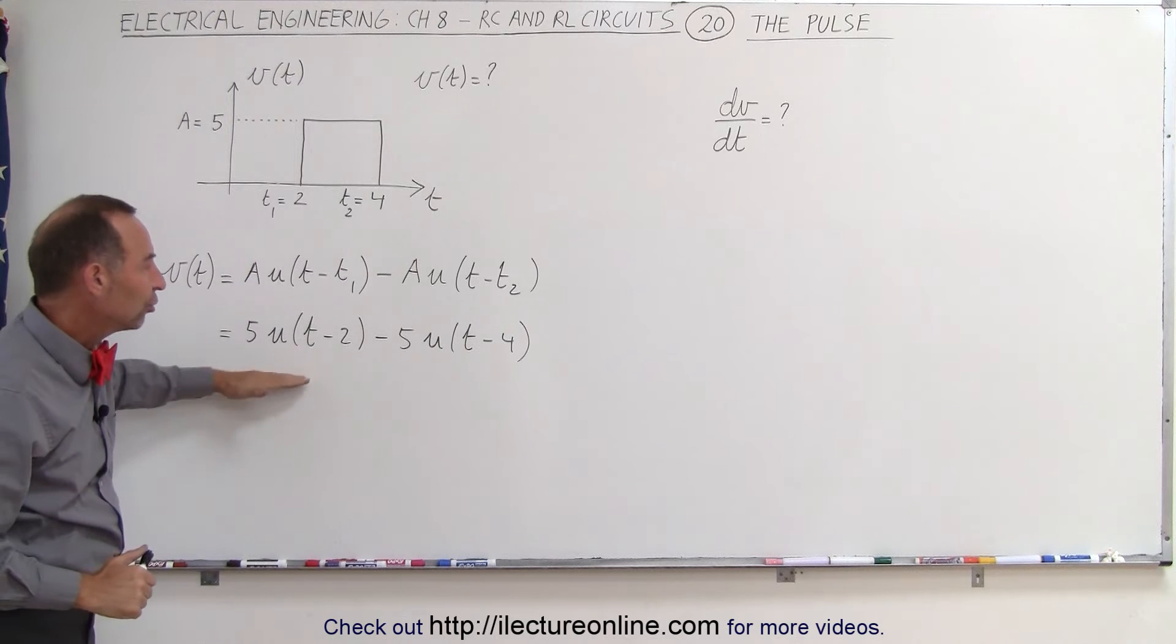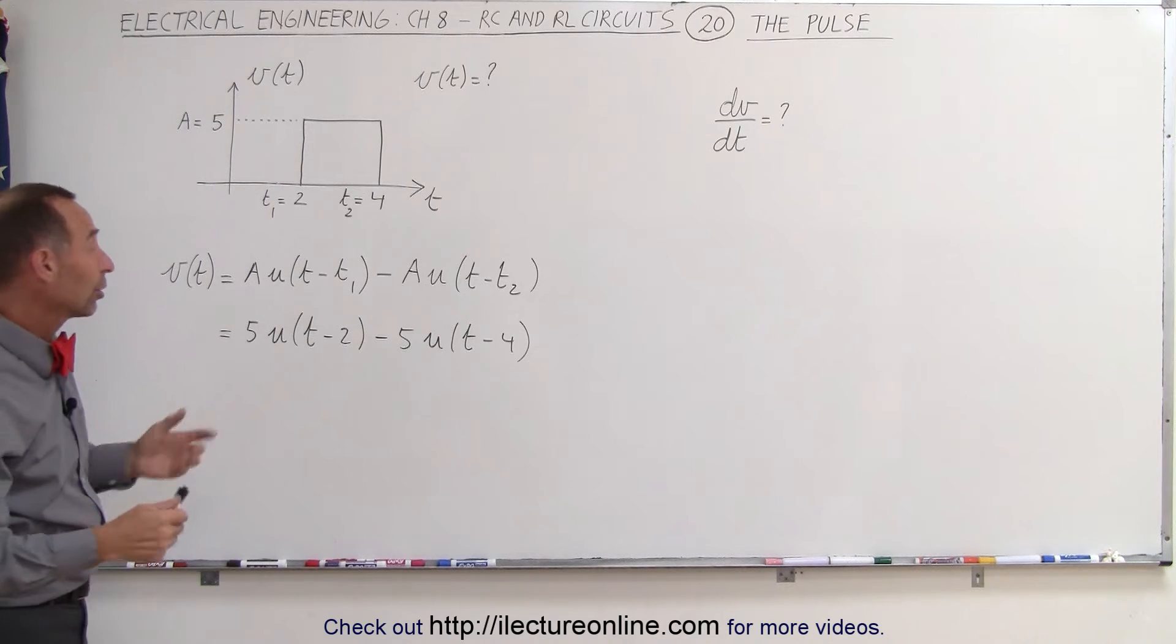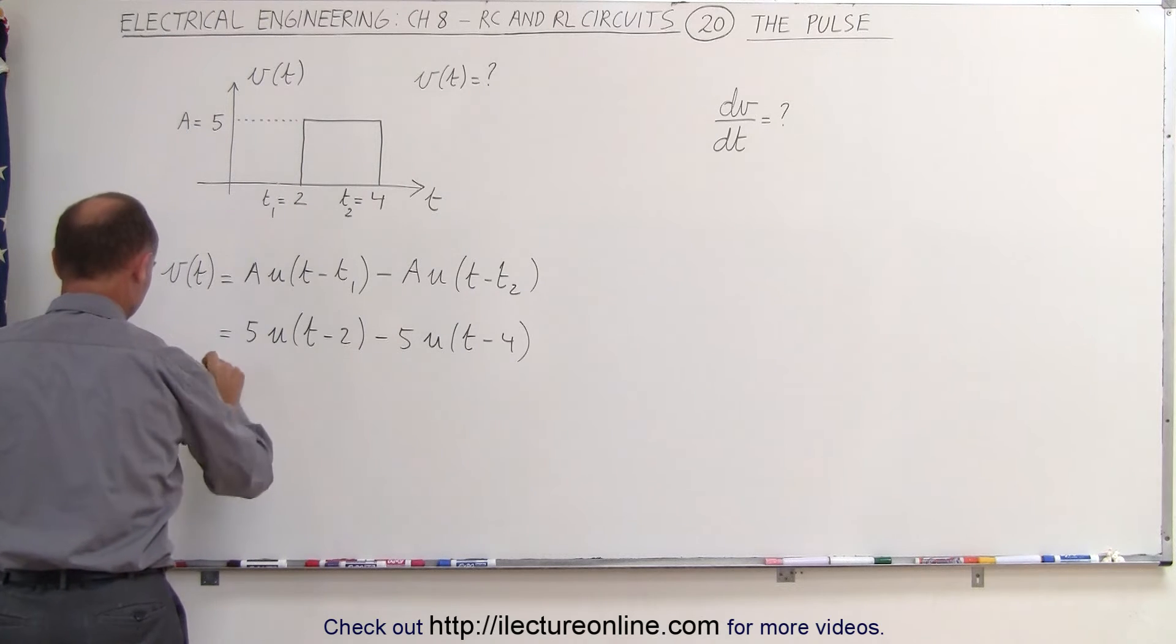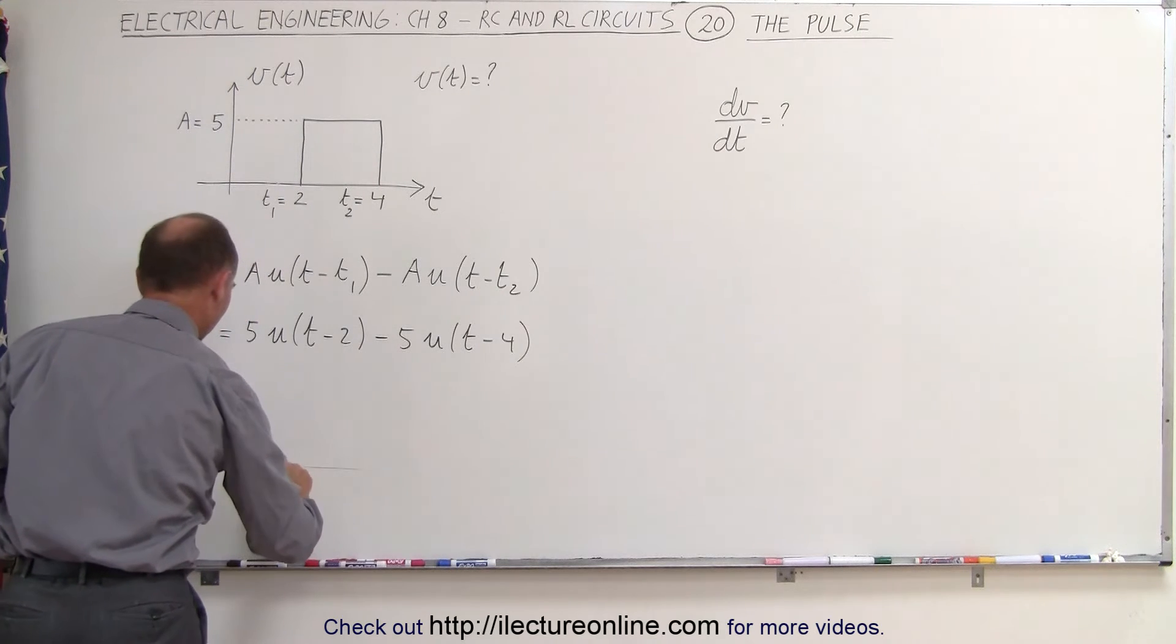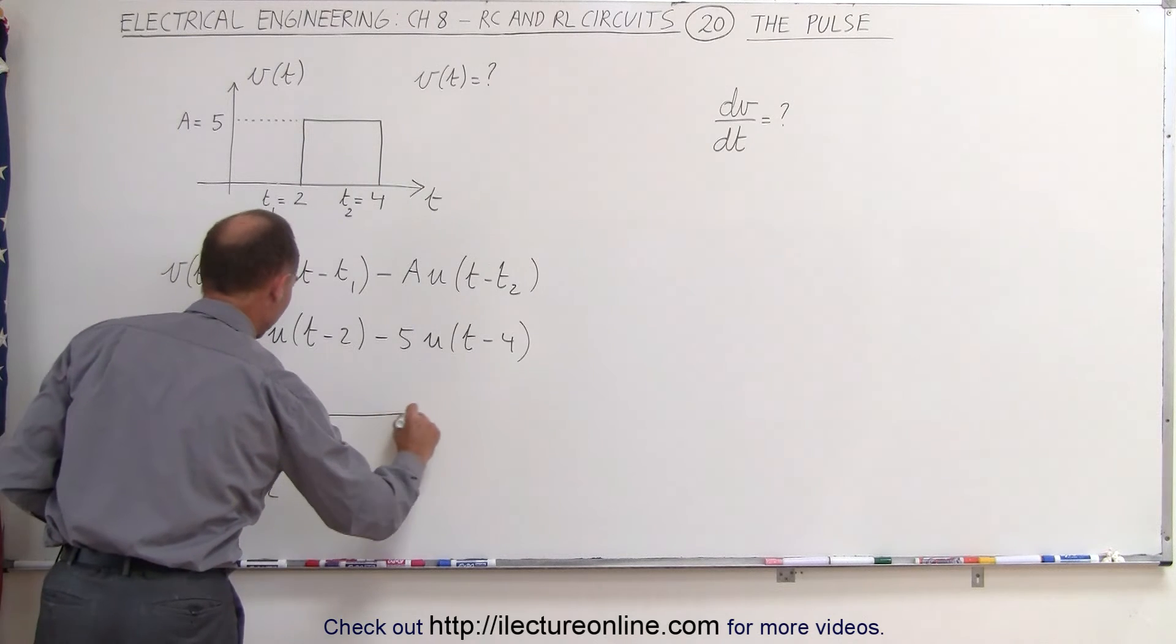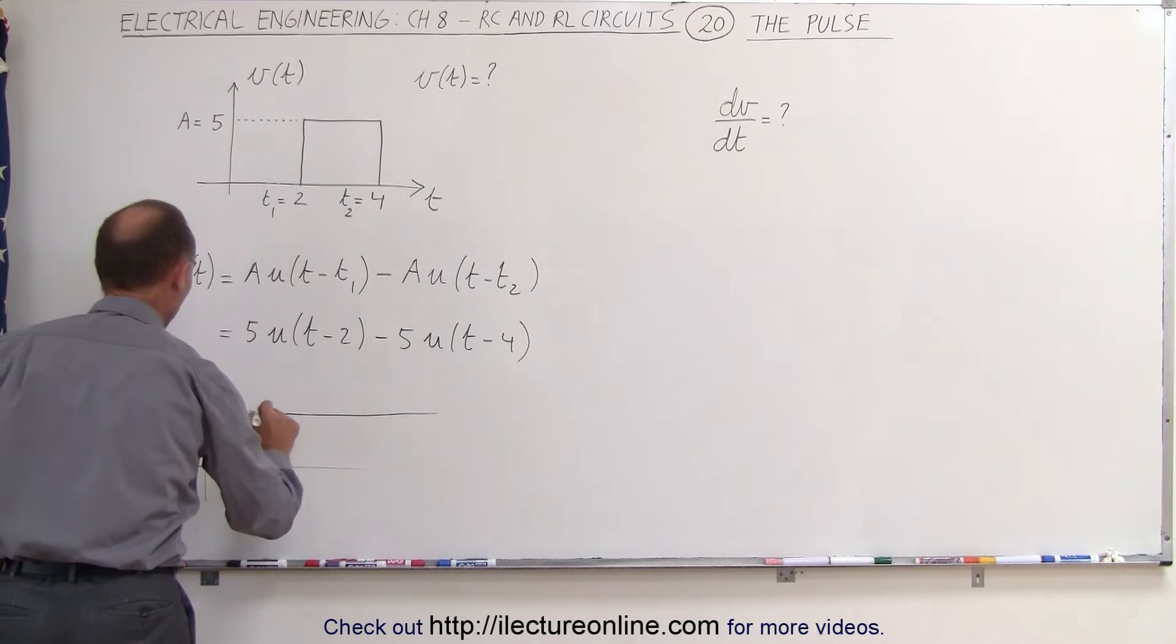If we separate these two as two separate functions, they will look as follows. This first function will look like this when we draw it out. After two seconds we would get an amplitude of five, and that would then go on forever.